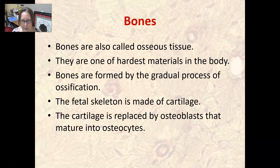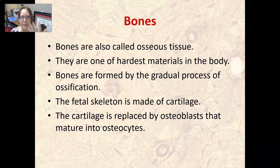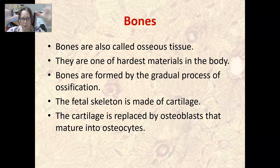Bones are also called osseous tissue. They are one of the hardest materials in the body and are formed by the gradual process of ossification. When a baby is formed in the womb, the fetal skeleton is first made of cartilage, which is slowly replaced by osteoblasts — think 'build bone.' As osteoblasts build bone and find themselves completely encased in bone, they mature into osteocytes.